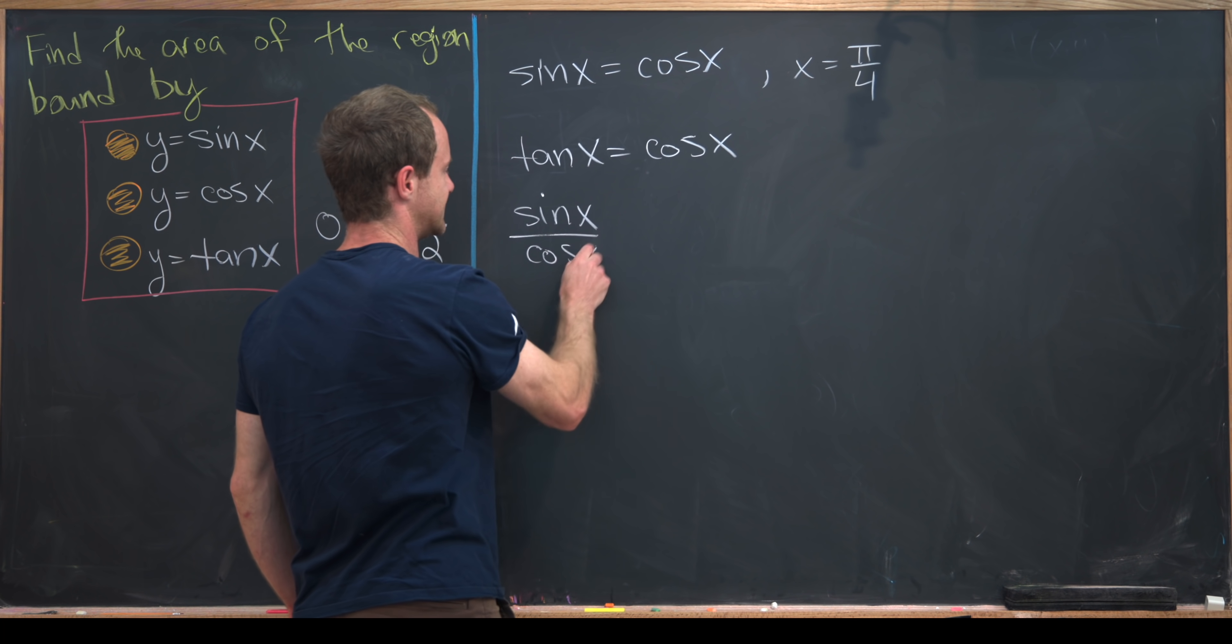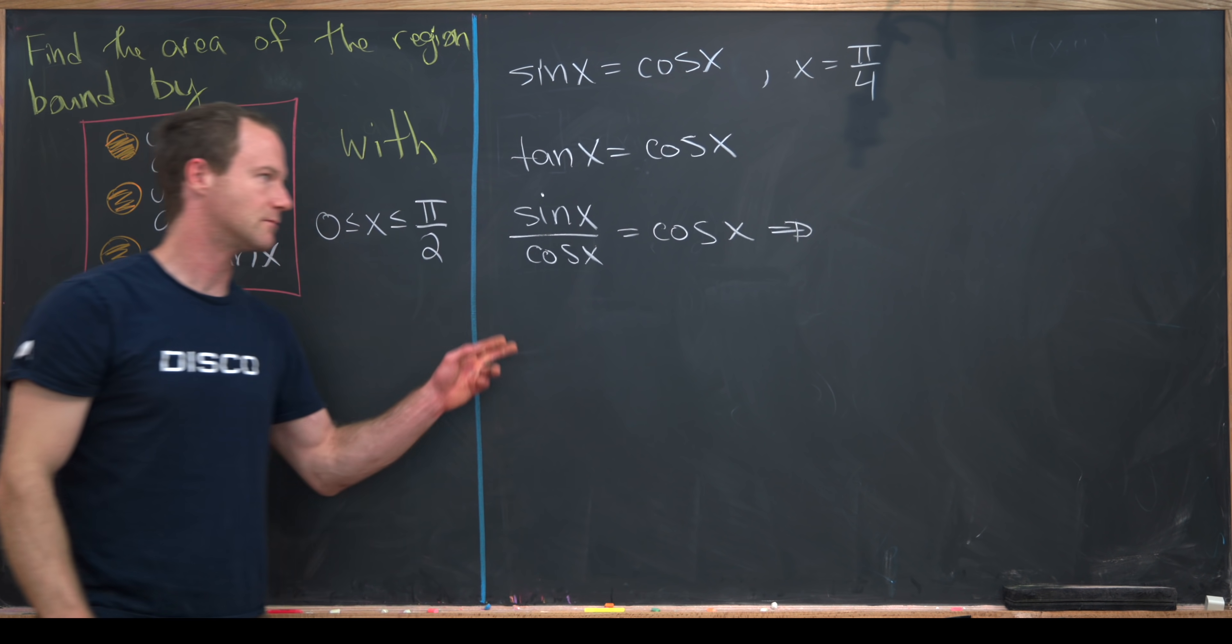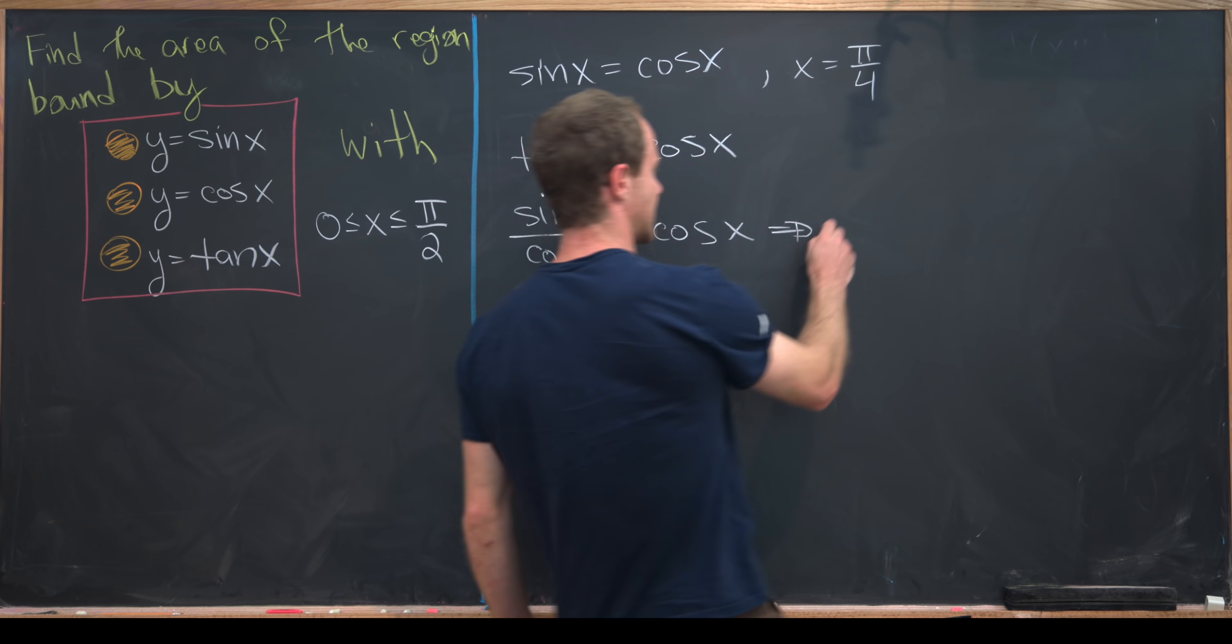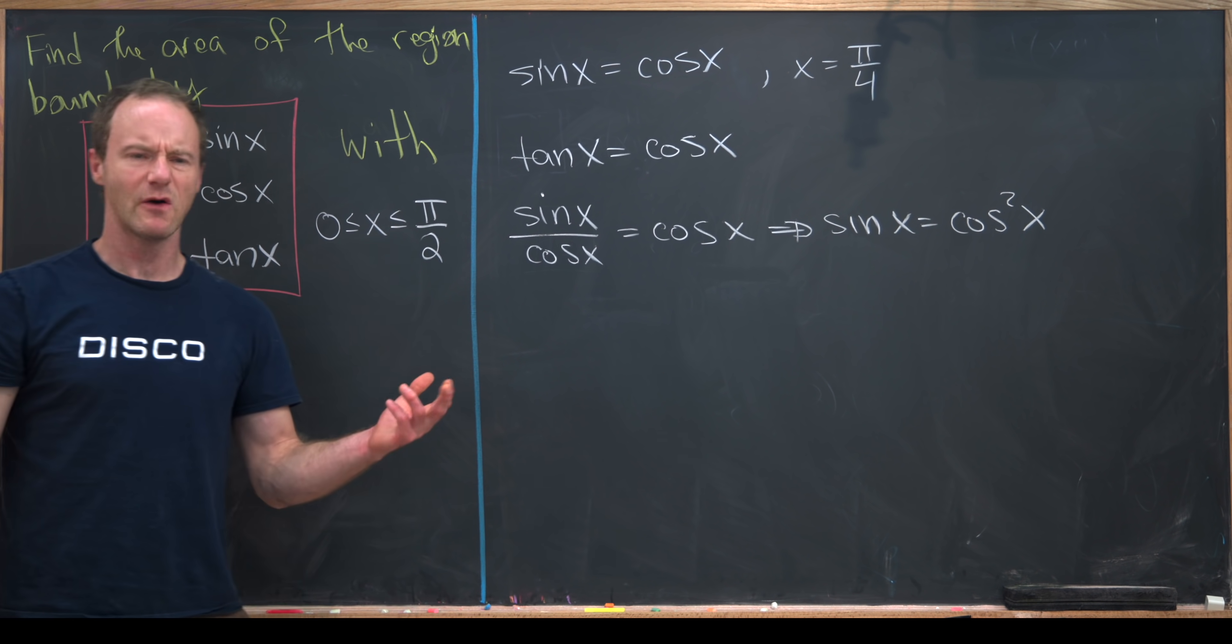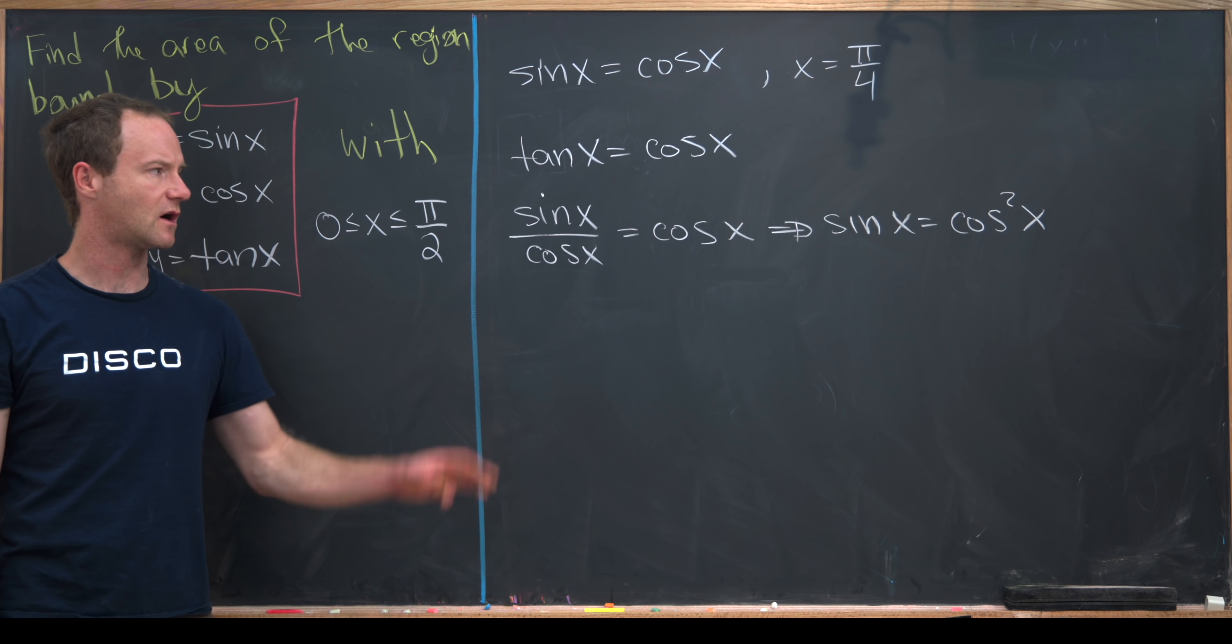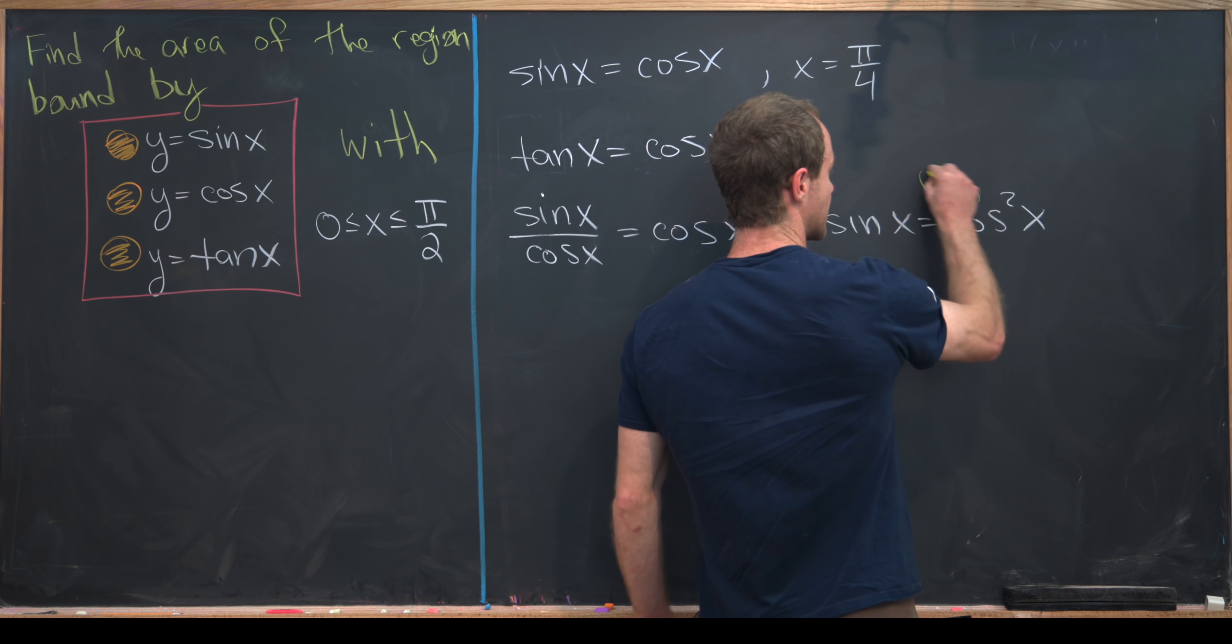So this is the same thing as sine over cosine equals cosine, but we can multiply both sides by cosine and that'll leave us with sine of x equals cosine squared of x.